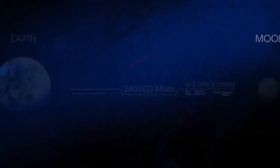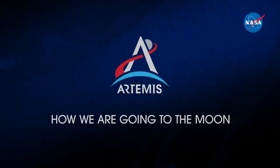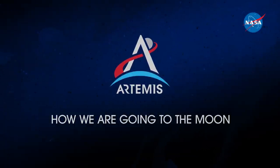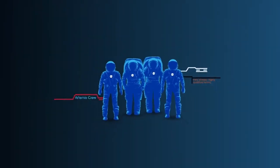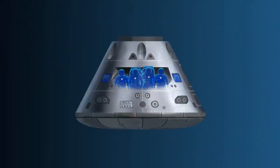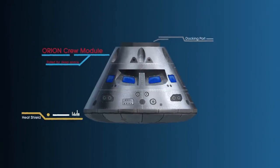So what will an Artemis mission look like? Everything is designed and tested with our most important element in mind, the astronauts. This is their deep-space, human-rated spacecraft called Orion, built in three parts.